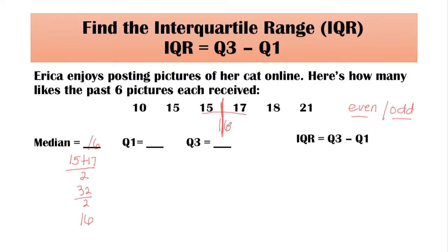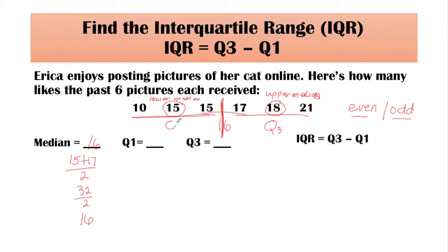So the median or middlemost number is 16, and 16 is in between 15 and 17. Since the median measures 50% above and 50% below, let us find the upper median. We have 17, 18, and 21, and the middlemost number is 18, and we call it Q3. Then let us find the lower median. Our Q1 is 15 and Q3 is 18. The formula in finding the interquartile range is Q3 minus Q1, which is 18 minus 15. Therefore, the interquartile range for this data set is 3.